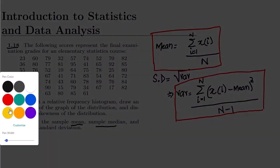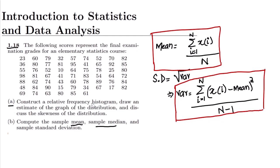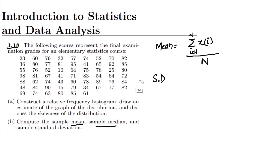In part (a), we also have to construct a relative frequency histogram, draw an estimate of the graph of the distribution, and discuss the skewness of the distribution. So we are going to discuss what a histogram is, what the estimate of the distribution means, and what skewness is. Let me first explain what a histogram is.